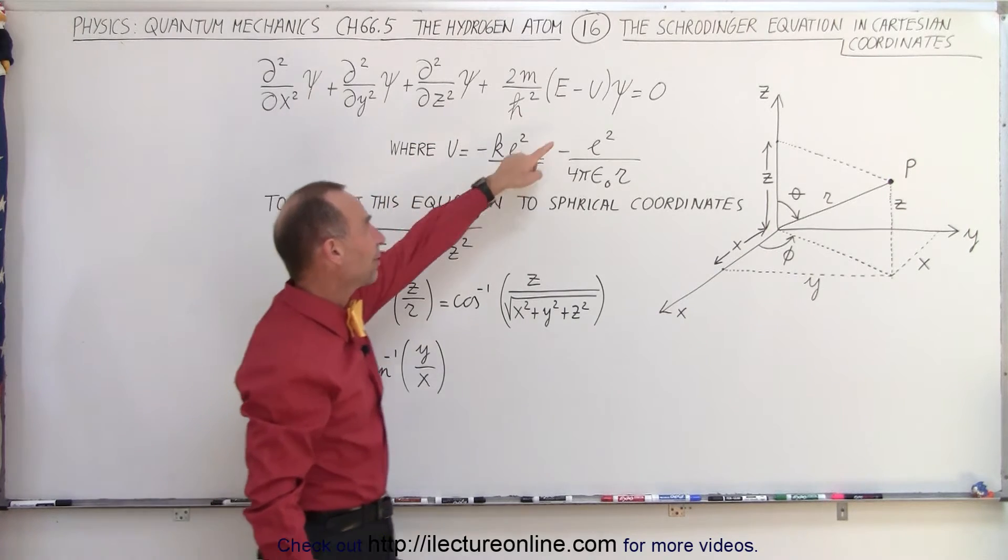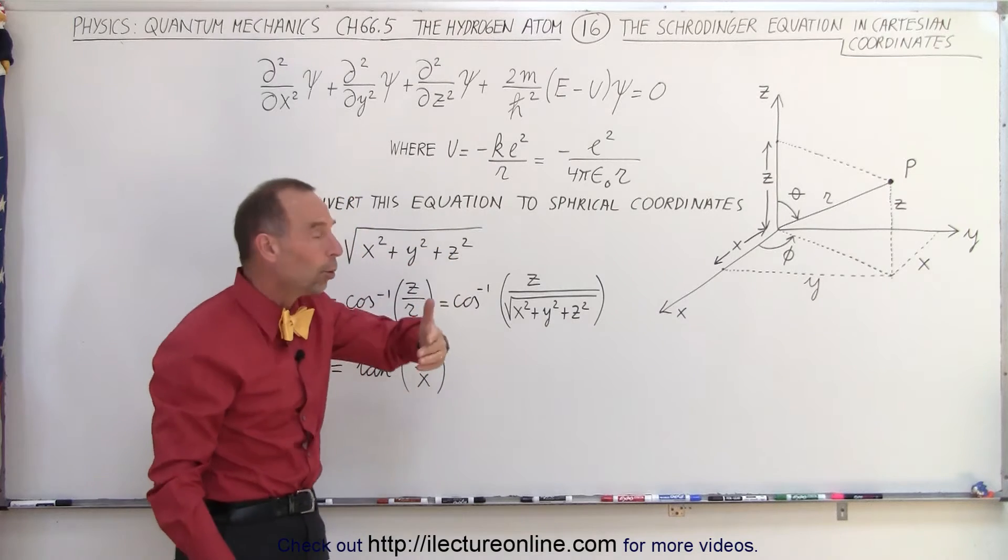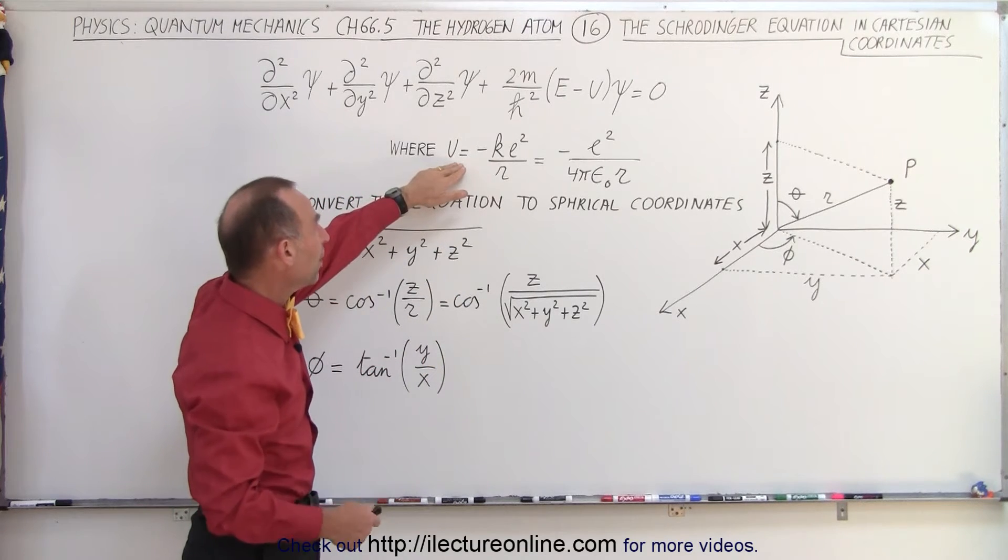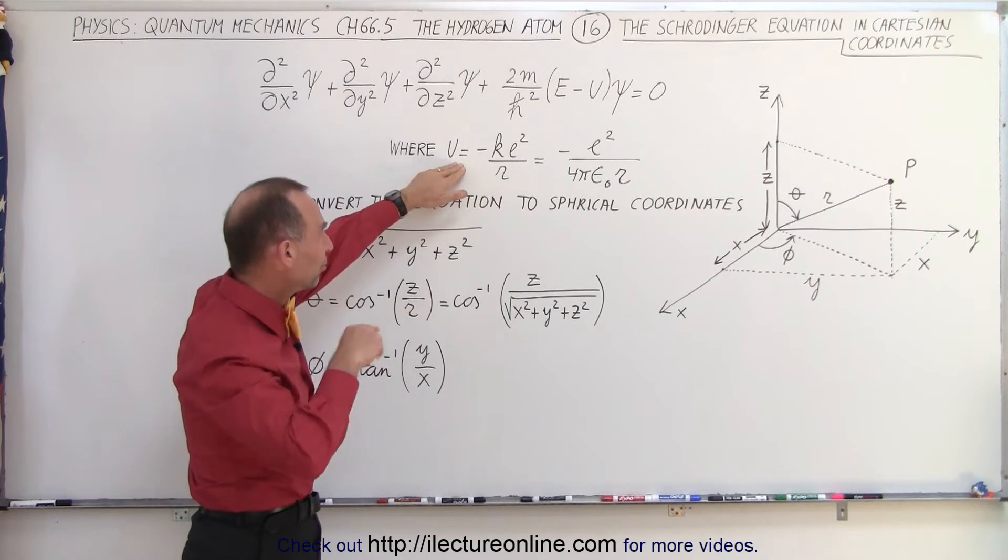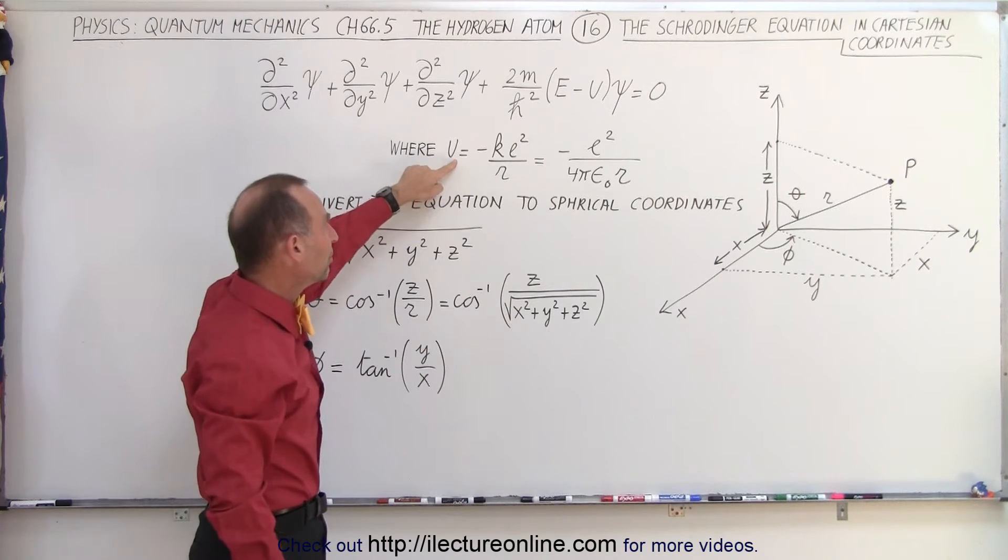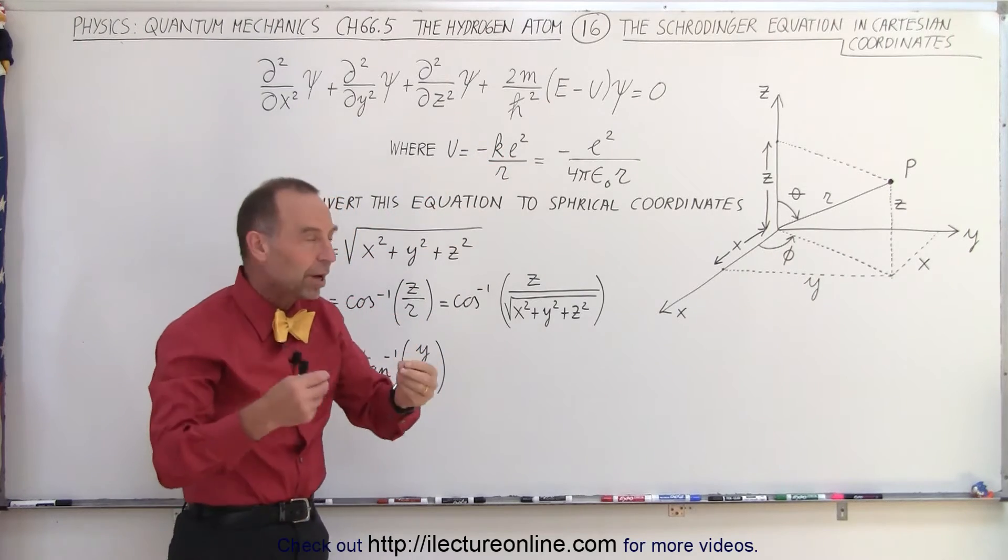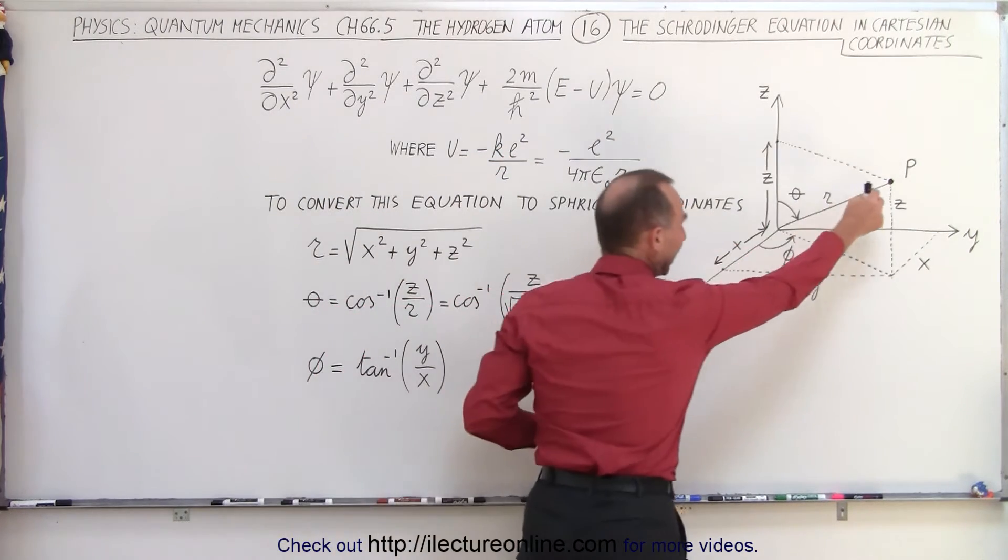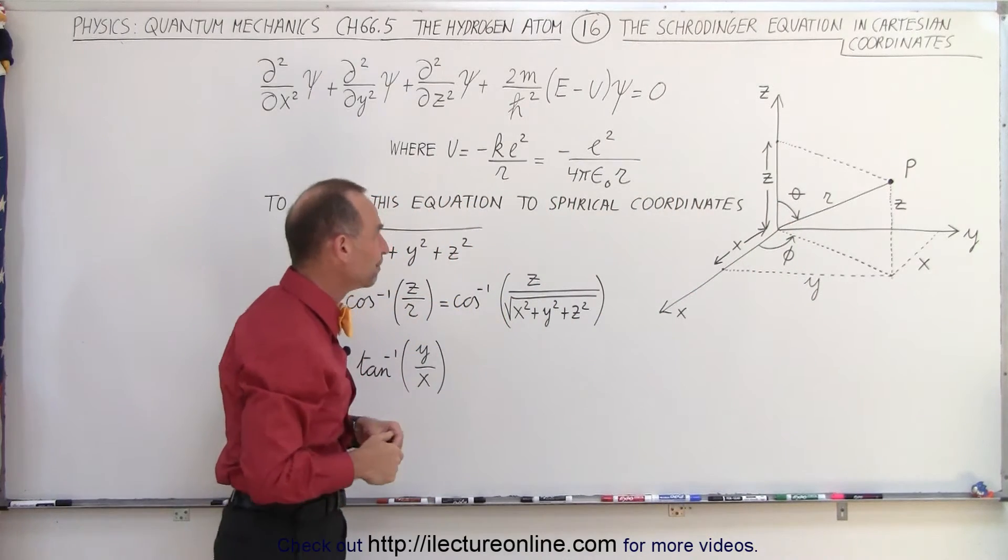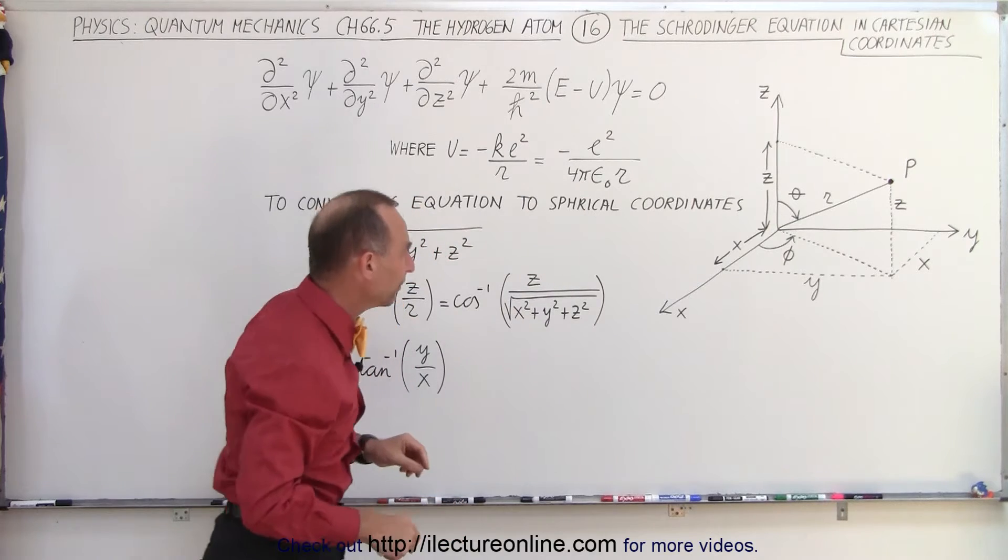Here we have u as being the potential energy, which is defined by the Coulomb law. If we then integrate over distance from infinity to the position of the electron, we get the potential energy to be minus k e squared over r. e squared is the product of the charge of the electron and the charge of the nucleus in the hydrogen atom. We can also write k as 1 over 4 pi epsilon sub-naught.